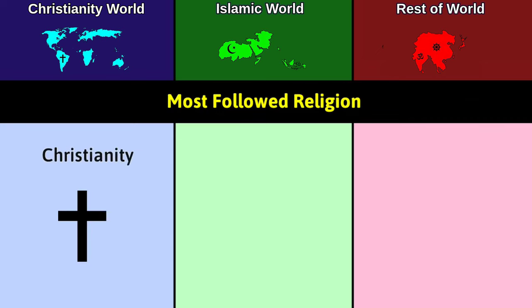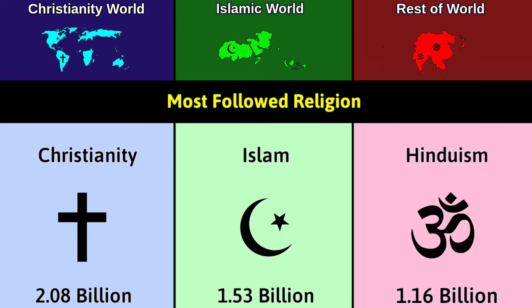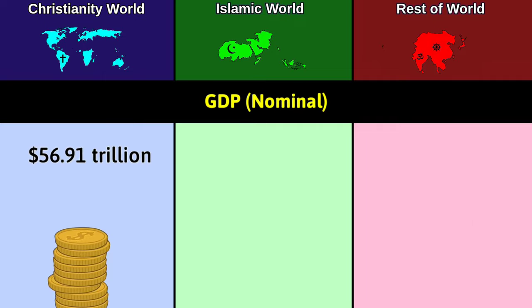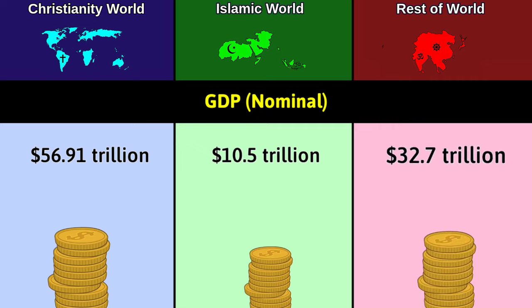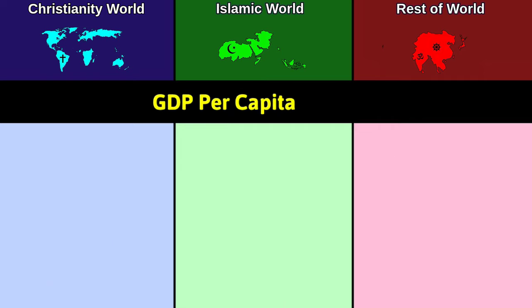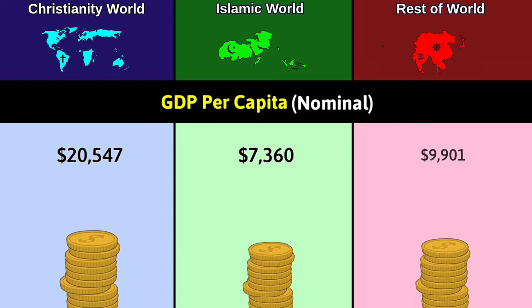Most followed religion: Christianity world — Christianity at 2.08 billion; Islamic world — Islam at 1.53 billion; Rest — Hinduism at 1.16 billion. GDP nominal: Christianity world 56.91 trillion dollars; Islamic world 10.5 trillion dollars; Rest 32.7 trillion dollars. GDP per capita for nominal GDP: Christianity $20,547; Islam $7,360; Rest $9,901.